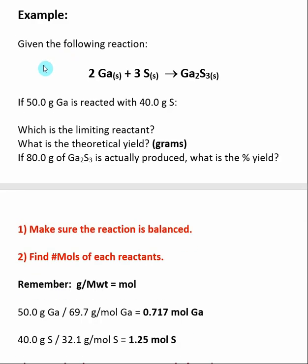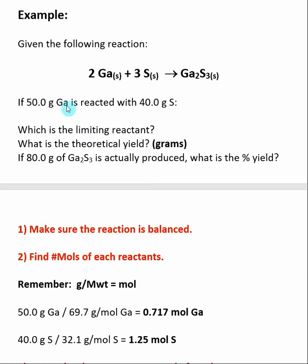Here we have an example involving gallium and sulfur. The mole ratio says for every two moles of gallium used up, we use three moles of sulfur and make one mole of gallium sulfide. We have 50 grams of gallium and 50 grams of sulfur. We want to find which of these two — gallium and sulfur — is the limiting reactant, and then what is the theoretical yield in grams.